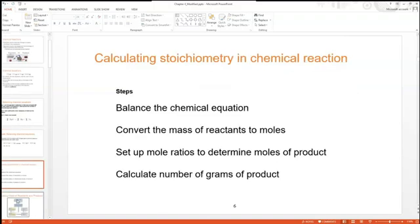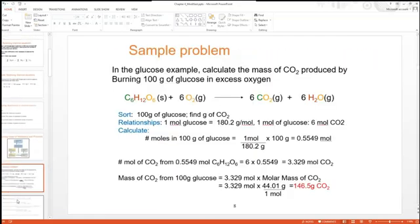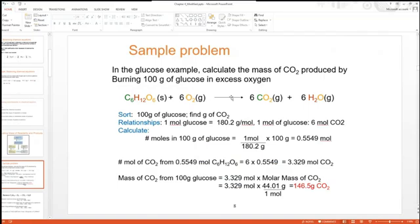We can then calculate more about the reaction knowing the balanced reaction. We can calculate how many moles there are, the mass of a certain sample. We can calculate a lot using the stoichiometry and the molar ratios. For example, if we have glucose in the same reaction and we are burning 100 grams of glucose, calculate the mass of CO2 produced. We can first calculate how many moles of glucose is 100 grams. You take the 100 grams of glucose divided by the molar mass and you get 0.55 moles.